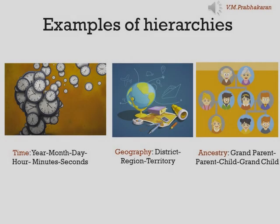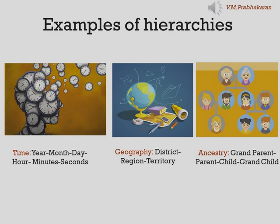Examples of hierarchies: a tree structure or tree diagram is a way of representing the hierarchical nature of a structure in graphical form. Whenever you have to represent a hierarchy, you could use a tree. Some examples of hierarchies include time, geography, and ancestry. In time, you can see year and month followed by minutes and then seconds. In geography, you can see district, region, followed by territory. In ancestry, you can see grandparent, parent, child, grandchild, and so on. For each of these, the hierarchy can be represented by a tree.